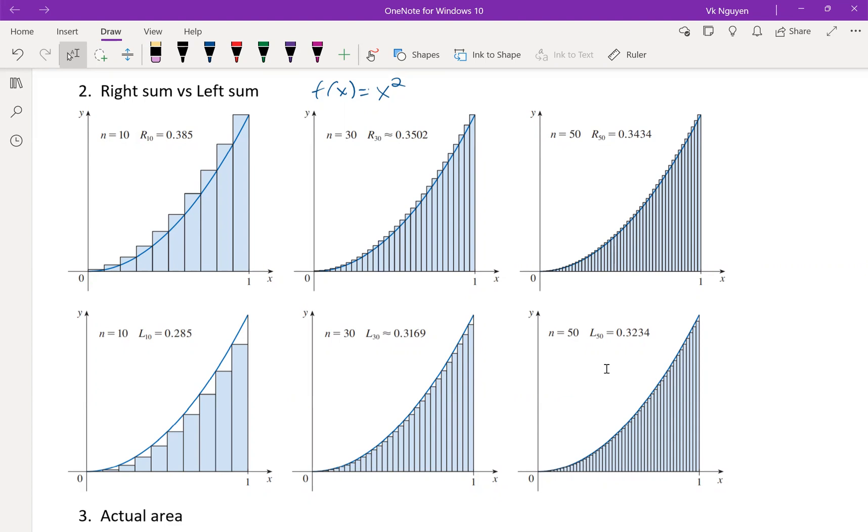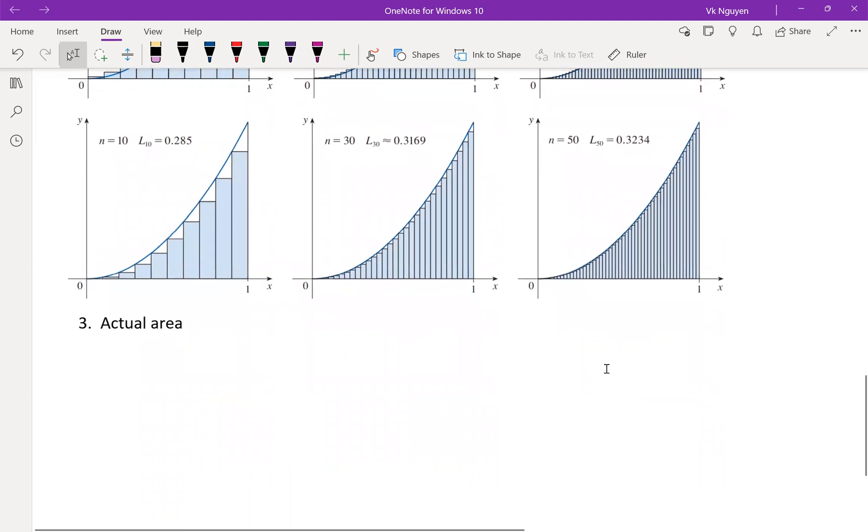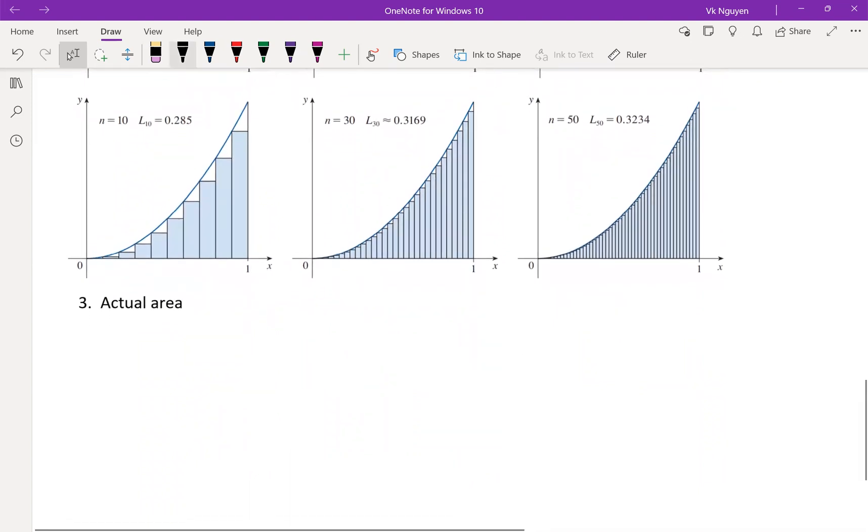How big can it get? Well, if we let n, limit n go to infinity of the right sum, this would be exactly the same as the limit n go to infinity of the left sum, and this is the area. Pretty cool, huh?